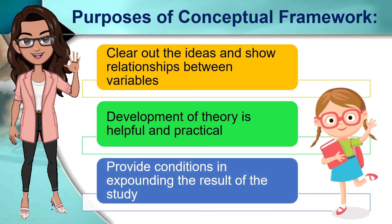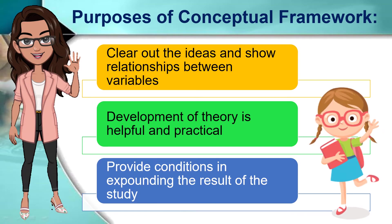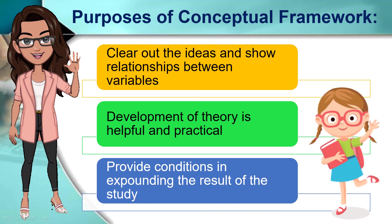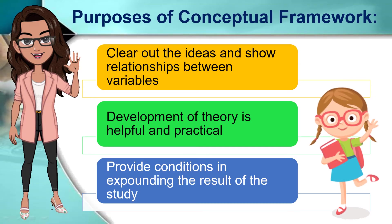Six, since the framework is your plan for the whole research, you can provide possible results and explanations for each. As mentioned, the framework includes your plan from start to finish, which means that you can also include the possible results. It can be only one result or more expected results, and definitely each expected result has an explanation of why you as a researcher think that it could be the result.